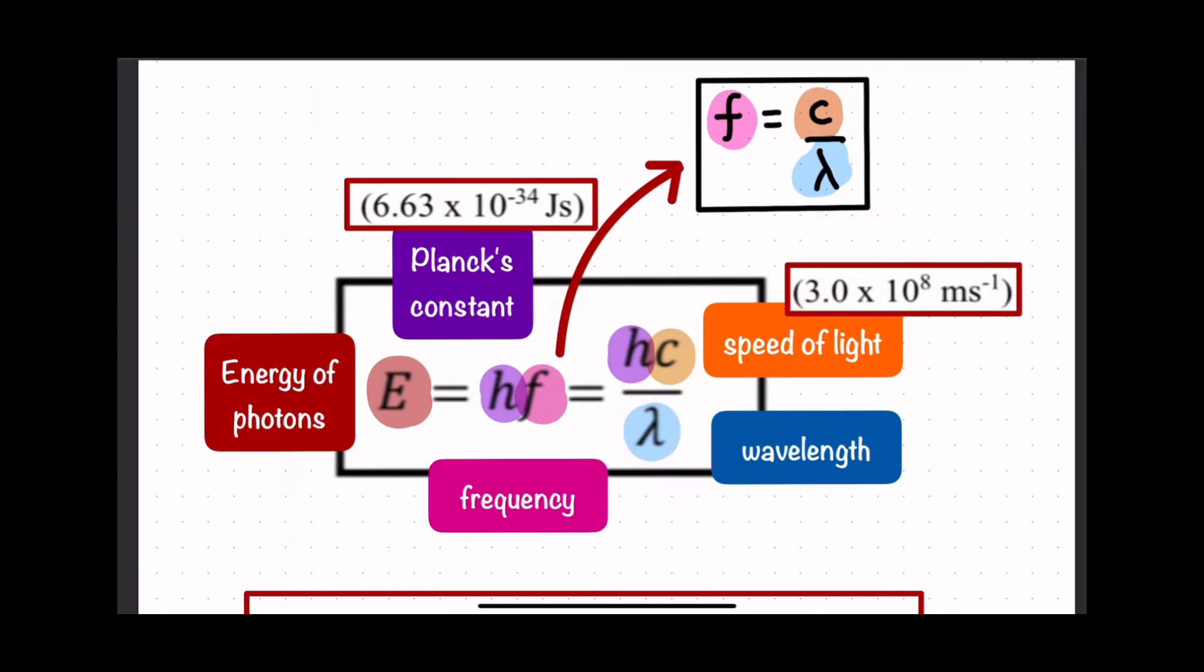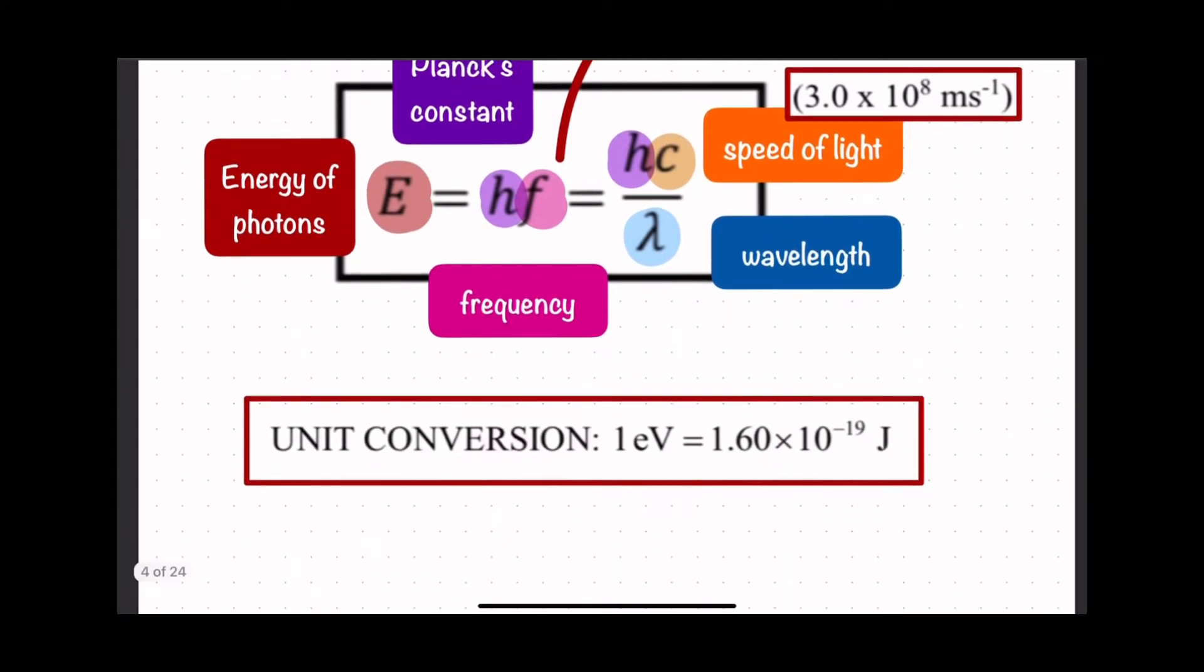This is the unit conversion: one electron volt equals 1.6 times 10 to the power of negative 19 joules. The equation can give energy in electron volts or in joules. To convert electron volts to joules, you need to multiply by 1.6 times 10 to the power of negative 19. Make sure you know how to convert between these units.